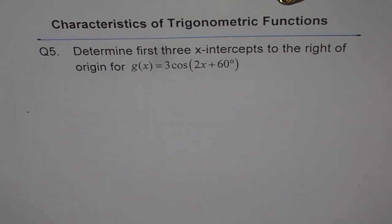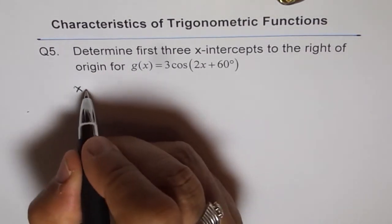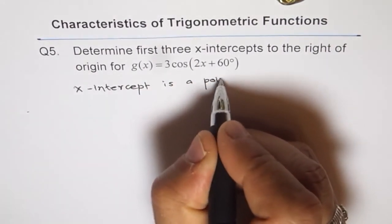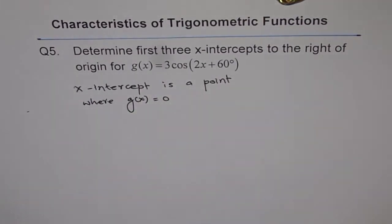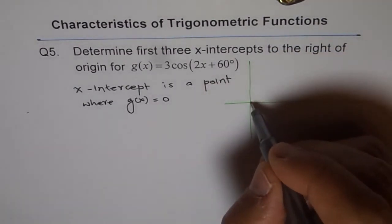In this series on understanding the characteristics of trigonometric functions, we are trying to find x-intercepts, y-intercepts, amplitude, axis of symmetry, and phase shift. Now, what is an x-intercept? An x-intercept is a point where the value of the function is 0 — that is, where g(x) = 0. It is a point where the graph of our function touches or crosses the x-axis. Let me sketch one so we can really see and understand.